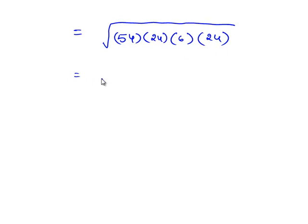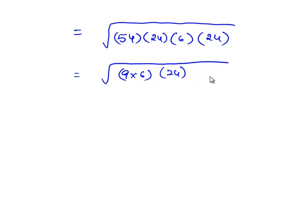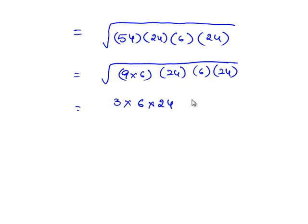This is equal to square root of 54 — written as 9 × 6 — and 24 × 6 × 24. Now 6 × 6 is 6², 24 × 24 is 24², and 9 is 3². We bring out the perfect squares from the square root, and we are left with 3 × 6 × 24, which is equal to 432 square meters.